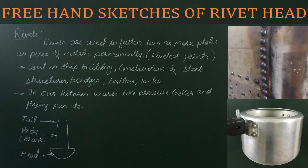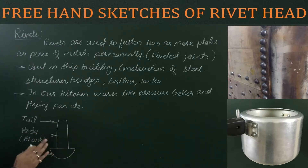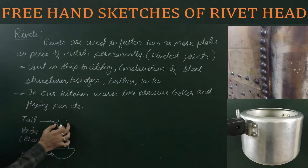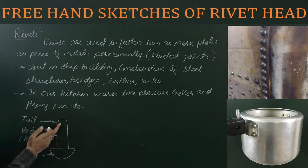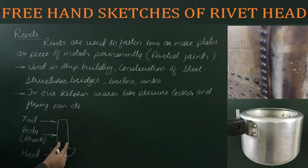A rivet is a small cylindrical piece of metal having a head — this part is the head — a body or central cylindrical part also called the shank, and a tapered tail. This end is known as the tail. So the three parts are: head, shank or body, and tail.